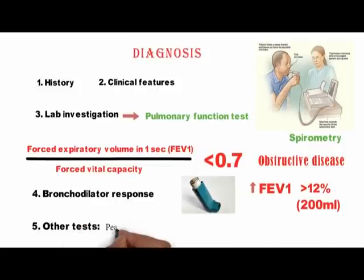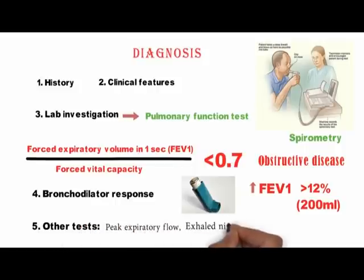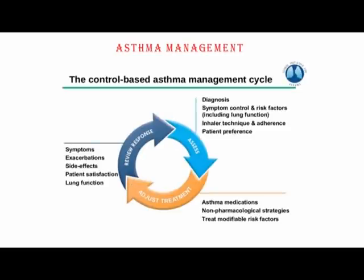Other tests that help in diagnosis are peak expiratory flow, exhaled nitric oxide, and eosinophilia on blood test. Asthma management is guided by GINA — the Global Initiative for Asthma. It includes routine assessment of symptoms and lung function, patient education, controlling environmental trigger factors and comorbid conditions, pharmacological and non-pharmacological therapy, and reviewing response in terms of symptoms, exacerbations, side effects, patient satisfaction, and lung function.